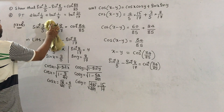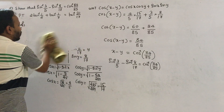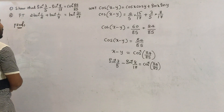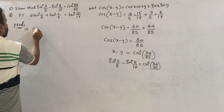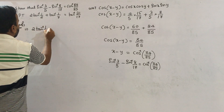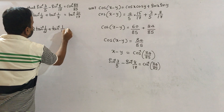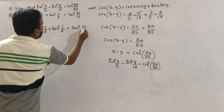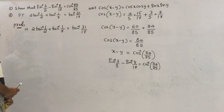Next, second problem: prove that 2 tan inverse of 1 by 2 plus tan inverse of 1 by 7 equals tan inverse of 31 by 17.